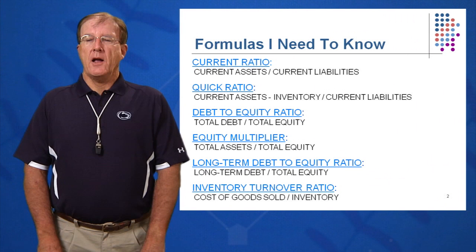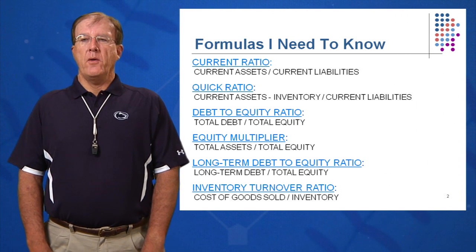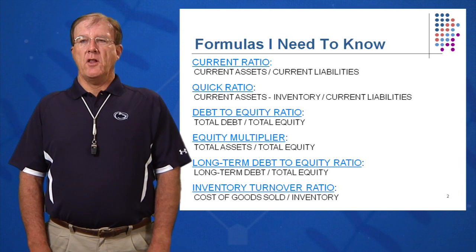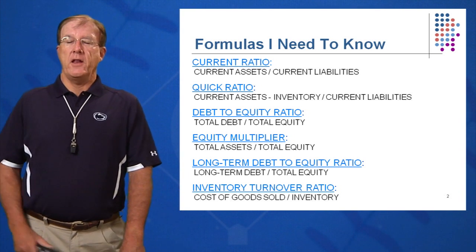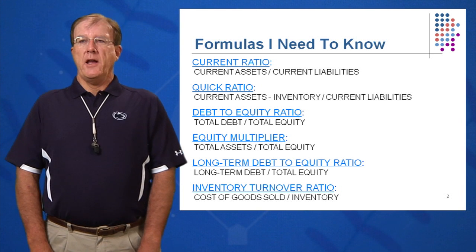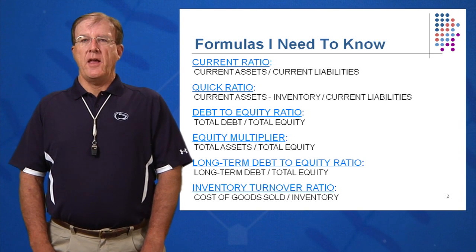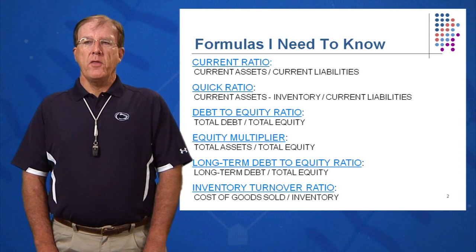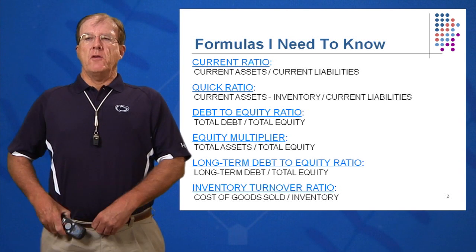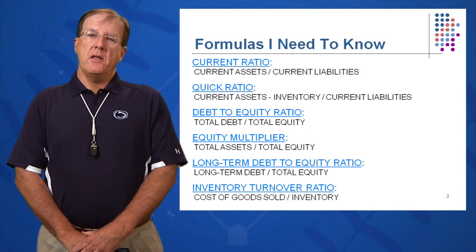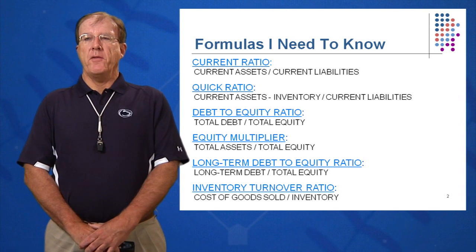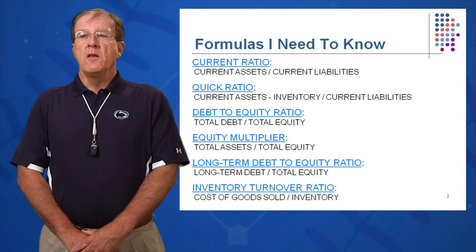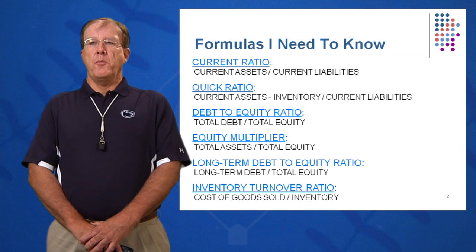First of all, we're going to talk about some key ratios we need to know. The ones listed here are ones you should try to memorize for life. I've selected the ones I've used across four different industries when I worked in industry. Every company I worked for uses these same ratios, some more than others. This allows you to look at which ratios are of primary importance and which are of secondary importance. There may be 40 to 50 ratios listed in the chapter, so we want to focus on the most important ones.